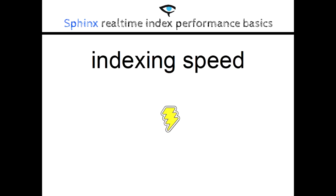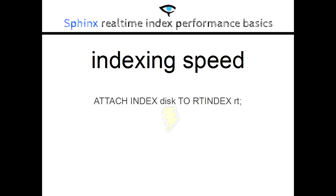Since real-time indexes are updated incrementally, indexing with them will be slower than with a plain index, considering we do single-threaded indexing. The best way to populate a real-time index with initial data is to first index with a plain index, and then transform it into a real-time index with the attach command. But what is the inserting speed in a real-time index, and what's the best way to insert a lot of data at once?